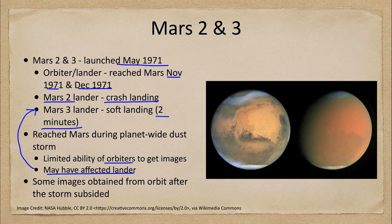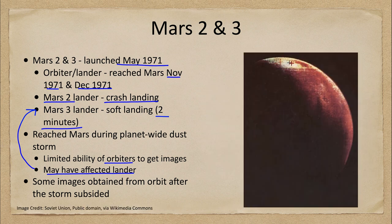Especially not well in advance — when you have to send the craft out many months in advance. As you see here, it took about six to seven months to get to Mars, so you'd have to know what is going on that far in advance. The storm did subside, so while the landers were not able to get us anything, images were able to be obtained.